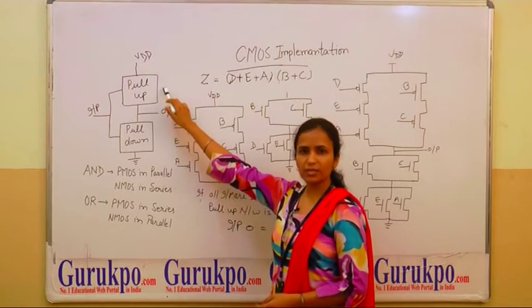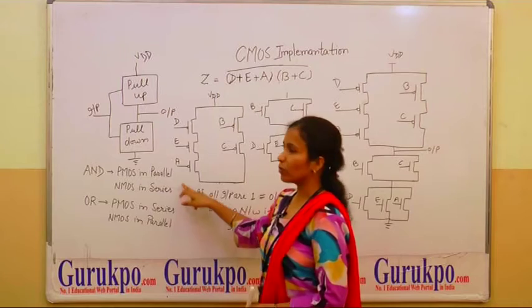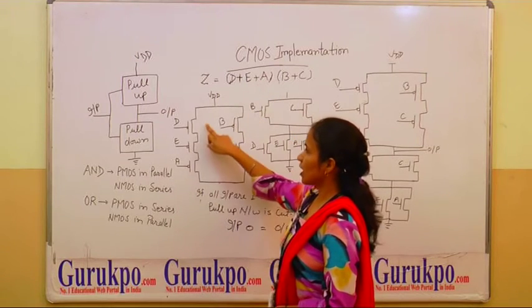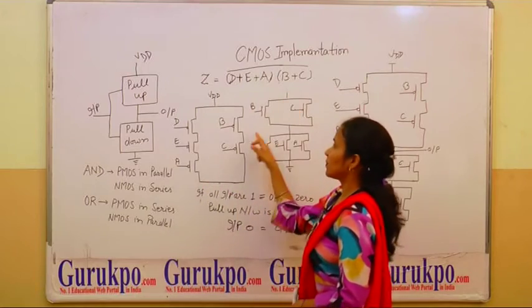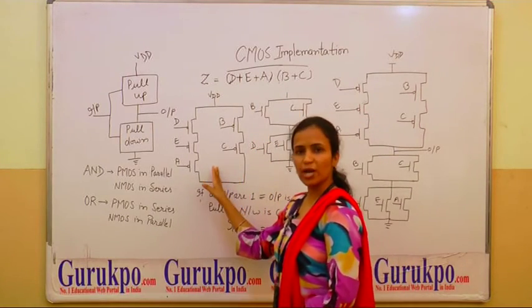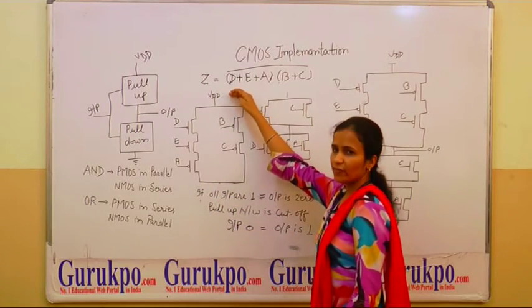First we want to construct pull-up network, which is made by PMOS transistor. According to the designing rule, there is an AND OR operation, so we have to connect this transistor in series form. Similarly, B plus C also in series form. Lastly we have to connect in parallel form to operate AND operation and this is connected to the VDD.